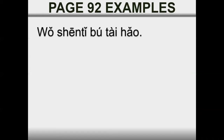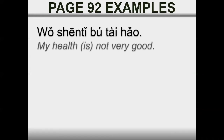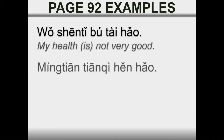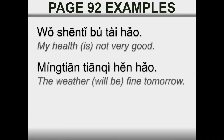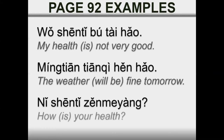Let's see some examples from page number 92. Wǒ shēntǐ bù tài hǎo — my health is not very good. Míngtiān tiānqì hěn hǎo — the weather will be fine tomorrow. Nǐ shēntǐ zěnme yàng? — How is your health? In these examples, I put the verb to be between brackets in English, because in Chinese we are not using the verb to be, but when we translate it, we use this verb.